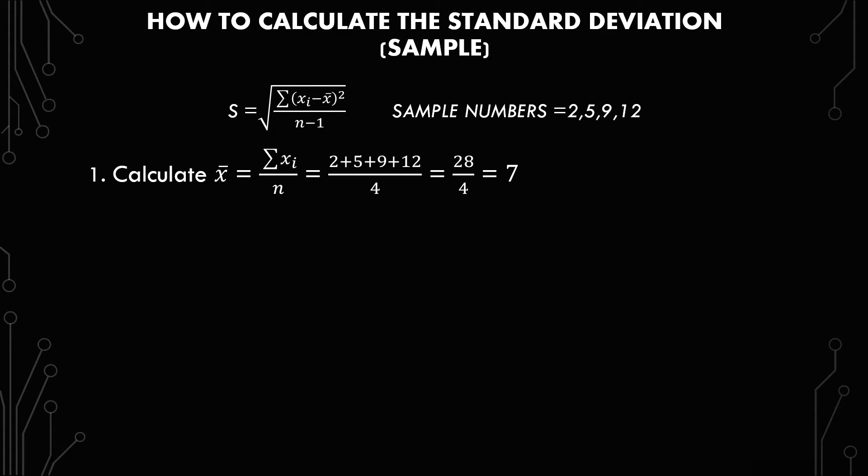First thing we have to do is calculate x-bar, which is the sum of each x over n. So we have 2 plus 5 plus 9 plus 12 over 4, which is 28 over 4, which gives you 7. So x-bar, the mean, is 7.